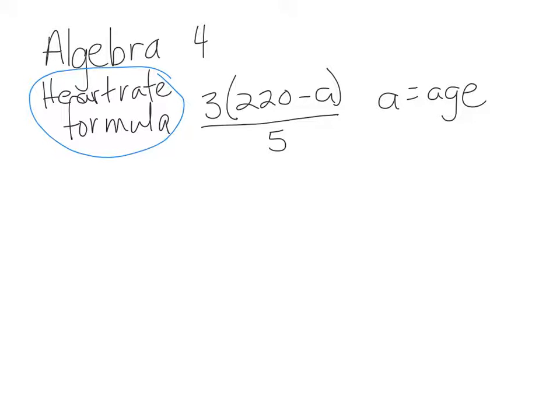When you're an athletic trainer, they want to know what your heart rate is as you are exercising. So it is 3 times 220 minus A divided by 5. That formula looks a little weird, but we're going to break it down. A equals the age of the person.